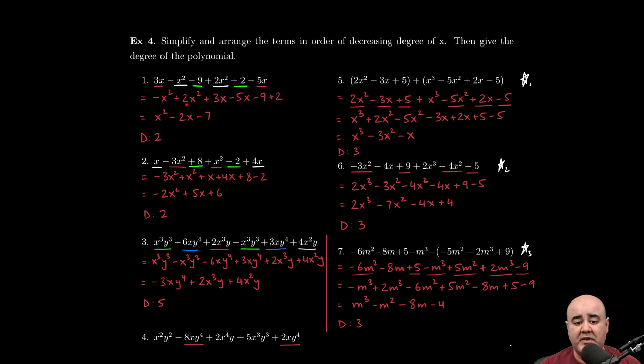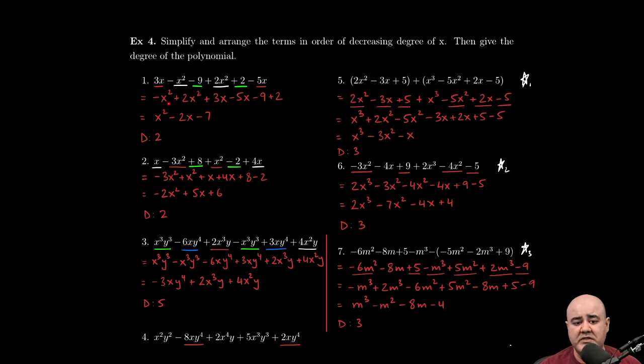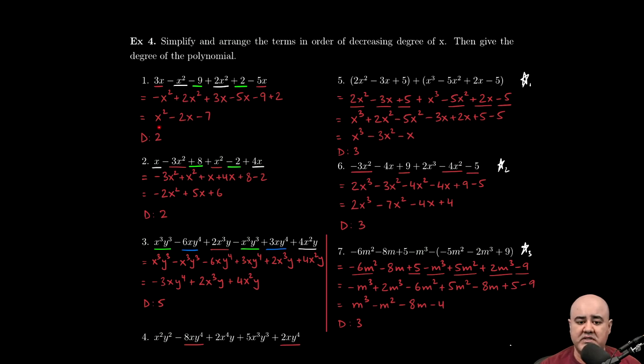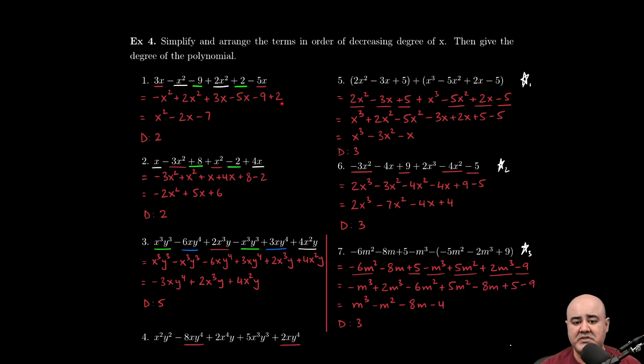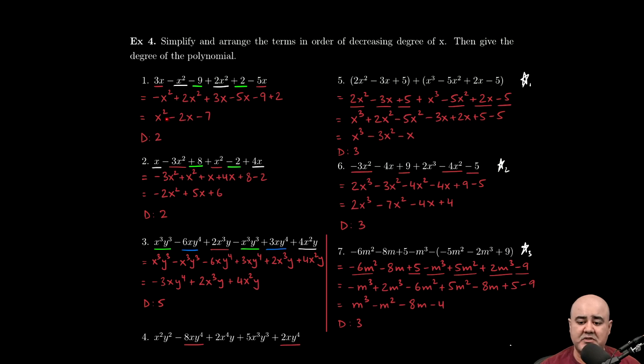For terms to be like terms or similar monomials or like monomials, the variables need to be the same and the powers need to be the same as well. This x squared is like with this x squared term. When we combine like terms, we just add or subtract the coefficients. Negative 1 plus 2 gives us positive 1x squared. 3x minus 5x, these are also like terms, same base, same power. So 3 minus 5 gives us negative 2x. Negative 9 plus 2 gives us negative 7. This is a polynomial in decreasing order of terms, so it's in standard form. The highest power of the variable x here is 2, so that's our degree.